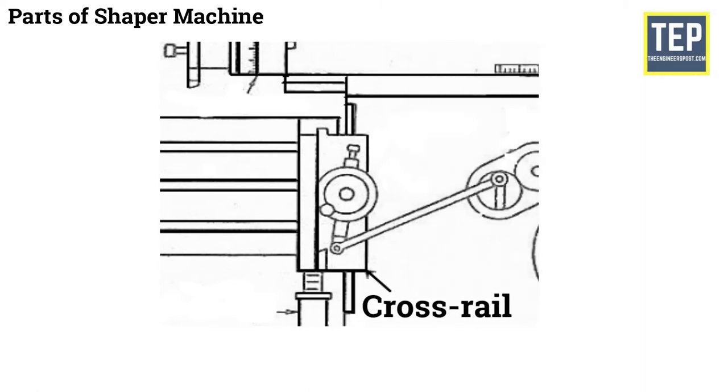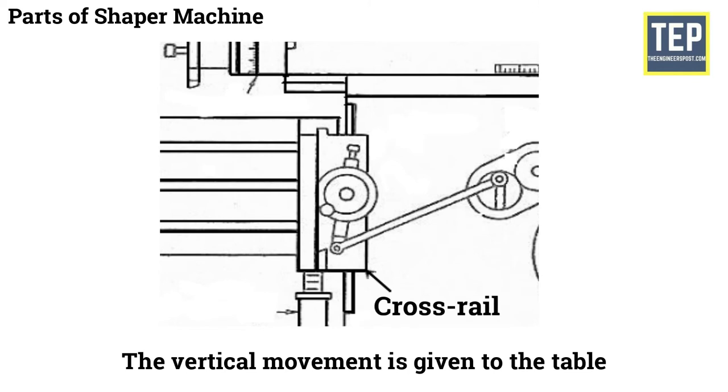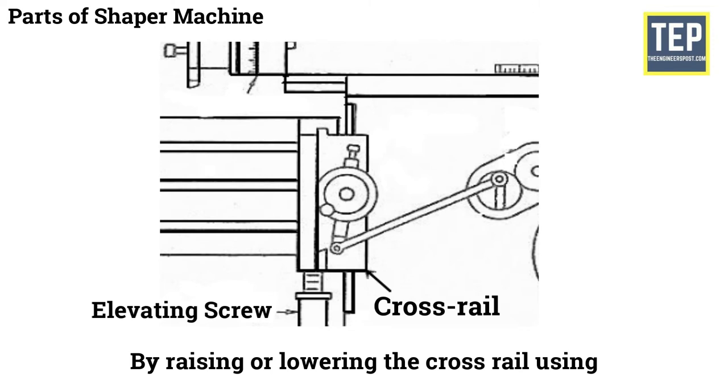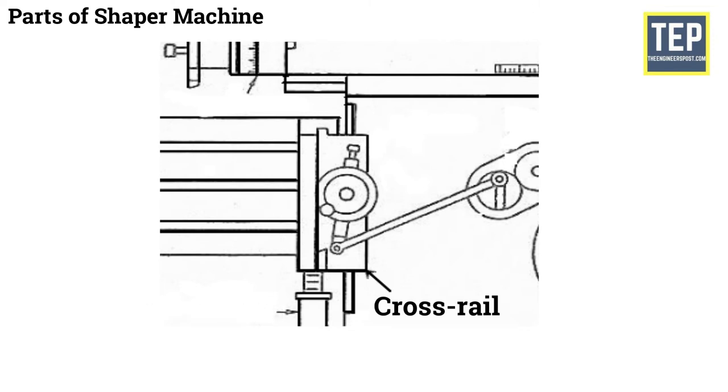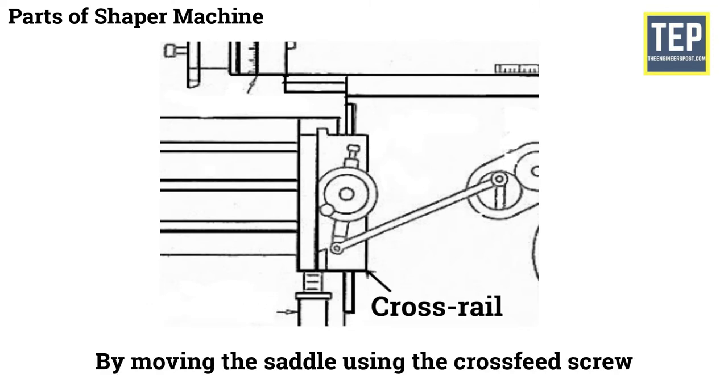Cross Rail is mounted on the front vertical surface of the column. The vertical movement is given to the table by raising or lowering the cross rail using the elevating screw. The horizontal movement is given to the table by moving the saddle using the cross feed screw.